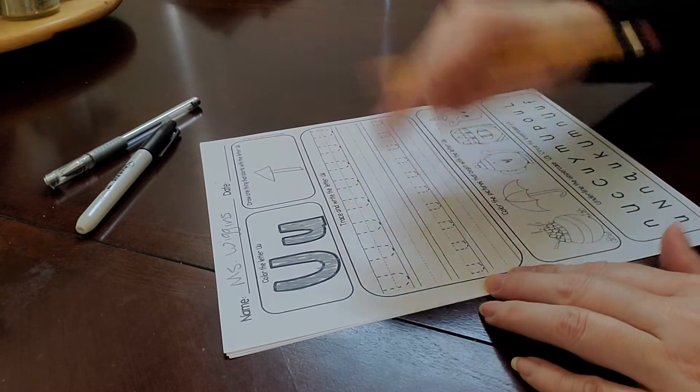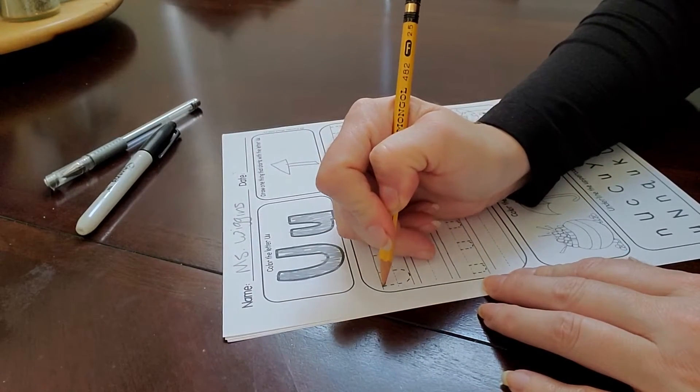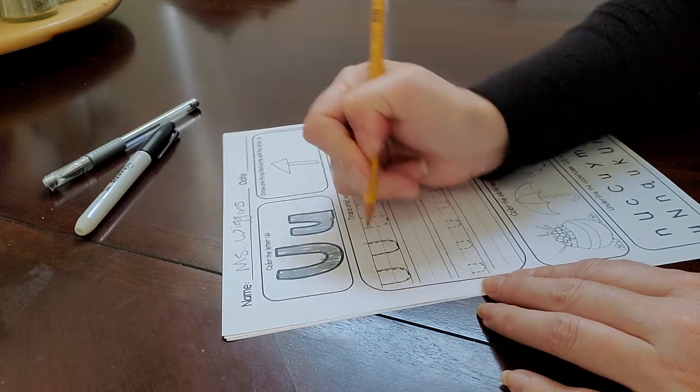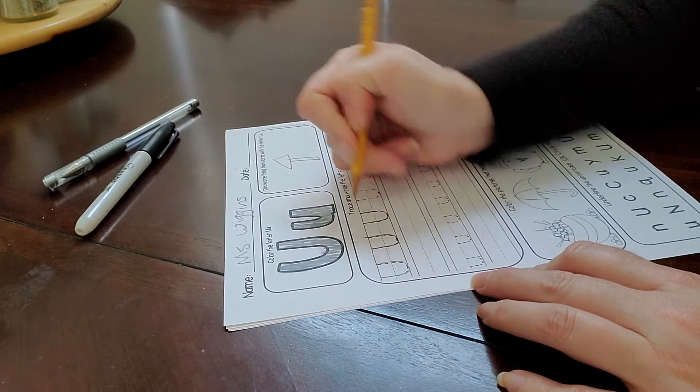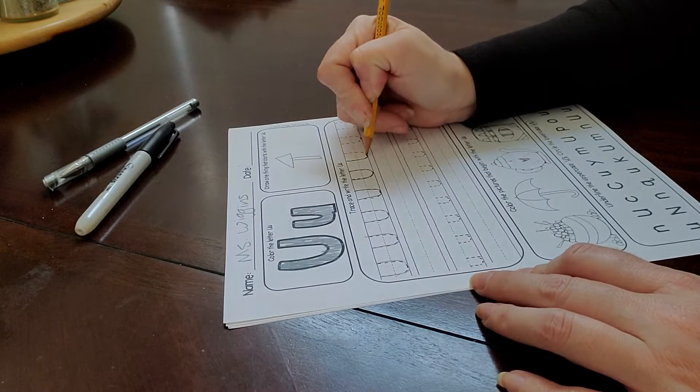Alright, and now we are going to trace our U's. So trace your U's starting at the top, going all the way down and around, and back up. Go ahead and trace all the uppercase U's. And then we're going to write three of them all by ourselves.